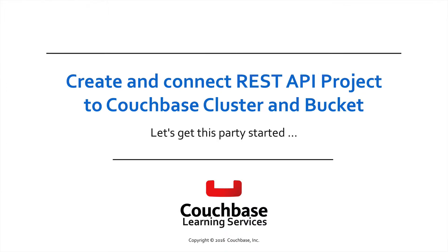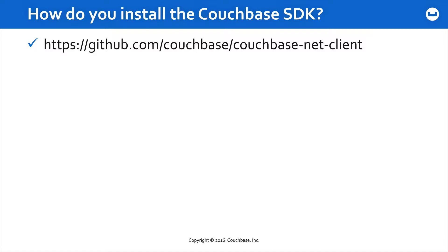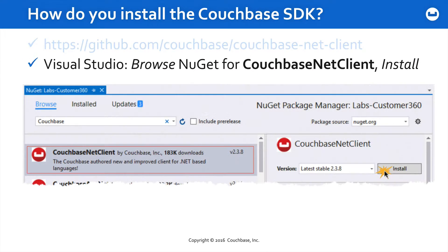In this lesson, we're going to take a look at how to configure the cluster from the client so that you can connect to a REST API project that you'll be building in Visual Studio. So how do you install the Couchbase SDK? You can go get it on GitHub, or if you want something easier, just go to NuGet, browse NuGet for Couchbase NetClient and install from there.